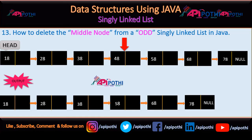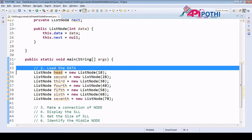Let me show you the diagram. In this diagram we have to delete the middle node from the odd singly linked list. We have our singly linked list with a total of 3+3+1 = 7 nodes containing data 18, 28, 38, 48, 58, 68, and 78, where 18 is the head and 78 is the tail. After deleting the middle element — the fourth position node, which is 48 — this would be our expected output.